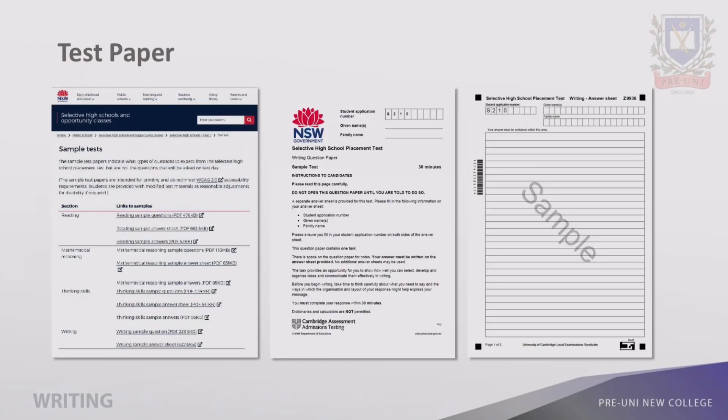The writing paper can be found at the given link. The information provided in the test paper is designed to be vague. This encourages students to be flexible, adapt, and think outside the box when necessary.